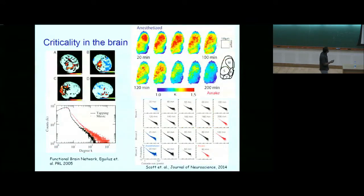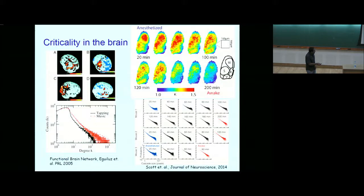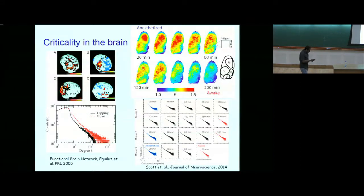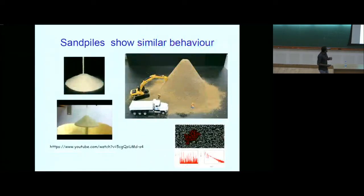A very interesting case is criticality in the brain. A mouse is anesthetized and at different times after that, you measure brain activity and its distribution. When the mouse wakes up completely after about 80 minutes, the activity follows a power law. So it's a nice thing to understand why power laws appear in nature. The oldest model addressing this is the BTW sandpile model, but first let me tell you what sandpiles are.